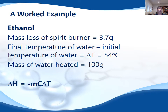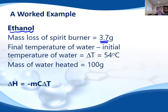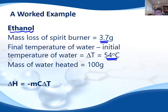Here's a worked example. Some data collected from an experiment: a mass loss of the spirit burner of 3.7 grams of ethanol — we're assuming ethanol was burnt in the combustion process. The final temperature of the water minus the initial temperature gave us a delta T value of 54 degrees Celsius, which is the same as 54 Kelvin.